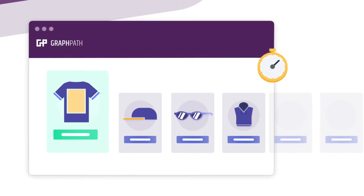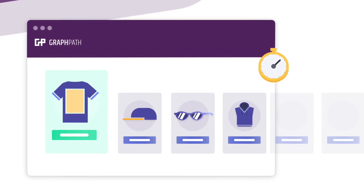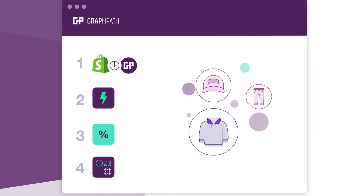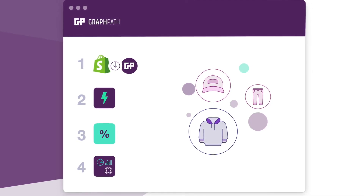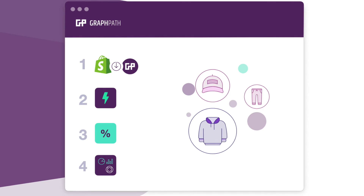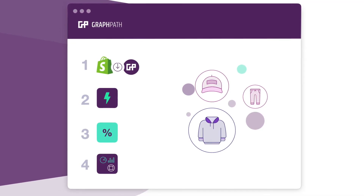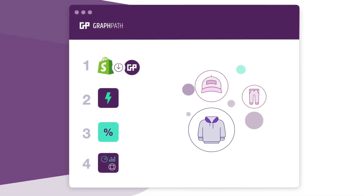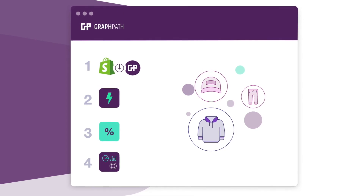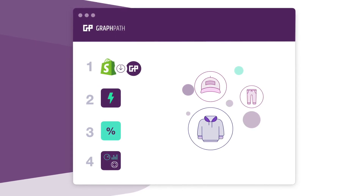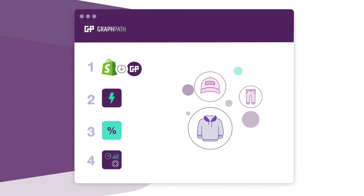So here's how it works: download GraphPath on the Shopify App Store, install the plugin in just a few clicks, customize the plugin to your site's look and feel, and enjoy the power of AI and real-time product recommendations through bundles directly on your site.